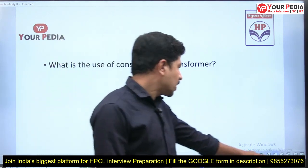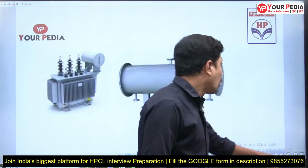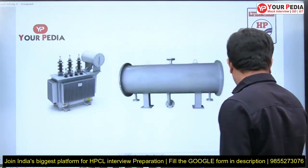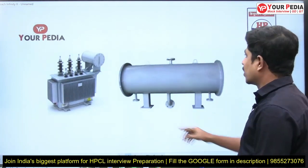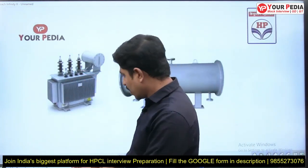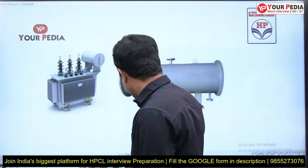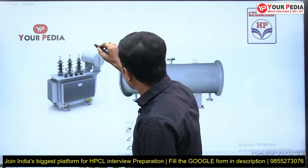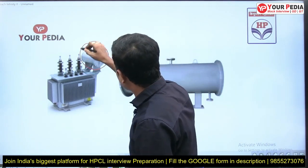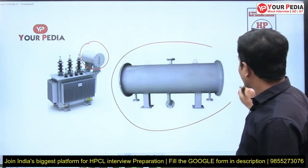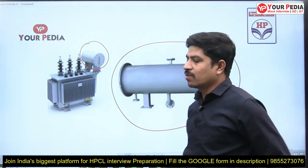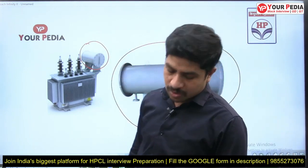If you see, this is how a conservator looks on a transformer. I will mark it here. This is the conservator, which I am showing separately. What is the purpose of that?